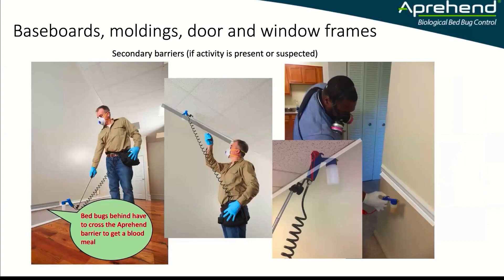Now we can look at some secondary barriers — the areas where bed bugs may have moved in a larger level infestation. We can go along the top of a baseboard so that bed bugs lodging behind it, whether they go up the wall or back down the baseboard, have to cross a barrier. We'll overlap that area to include about an inch of the wall and an inch of the baseboard. Note that Apprehend is a serious slipping hazard if sprayed on hard flooring — tile, vinyl, or hardwood — so we don't recommend spraying the floor; a dust product is much better at that level. On the tops of the baseboards you're good to go.